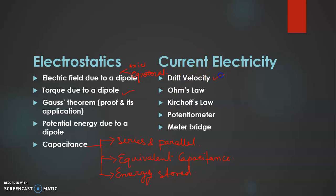Next, from current electricity, do drift velocity. From drift velocity, you have to derive the expression for drift velocity. And secondly, questions numerical related to drift velocity.